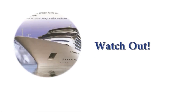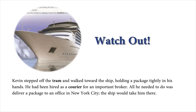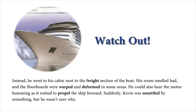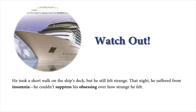Watch Out. Kevin stepped off the tram and walked toward the ship, holding a package tightly in his hands. He had been hired as a courier for an important broker. All he needed to do was deliver a package to an office in New York City. The ship would take him there. When he boarded, the ship was congested with people. As Kevin walked to his cabin, he saw the exclusive first-class section. Everybody inside was wearing fancy garments. He would have liked to socialize with the people inside, but it was against proper etiquette. People paid a premium for the privilege to ride in first class. Instead, he went to his cabin next to the freight section of the boat. His room smelled bad, and the floorboards were warped and deformed in some areas. He could also hear the motor humming as it waited to propel the ship forward. Suddenly, Kevin was unsettled by something, but he wasn't sure why. He took a short walk on the ship's deck, but he still felt strange. That night, he suffered from insomnia. He couldn't suppress his obsessing over how strange he felt.